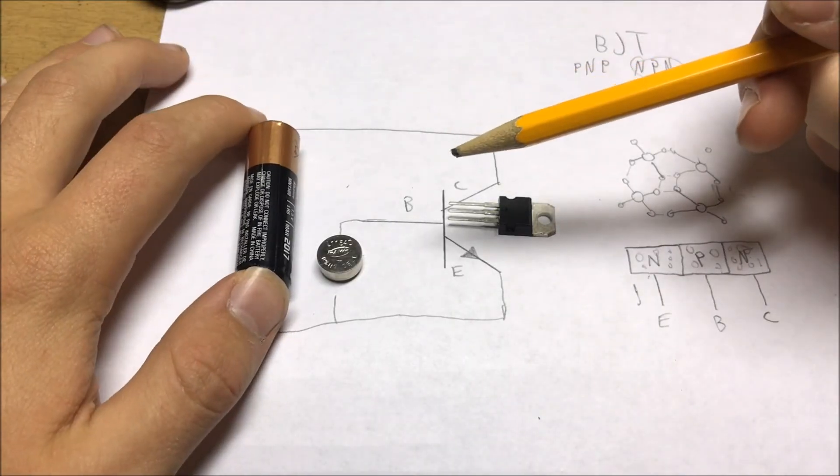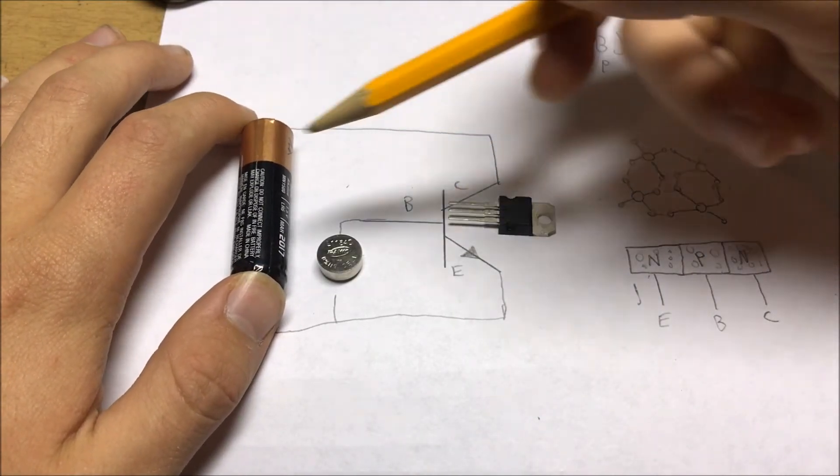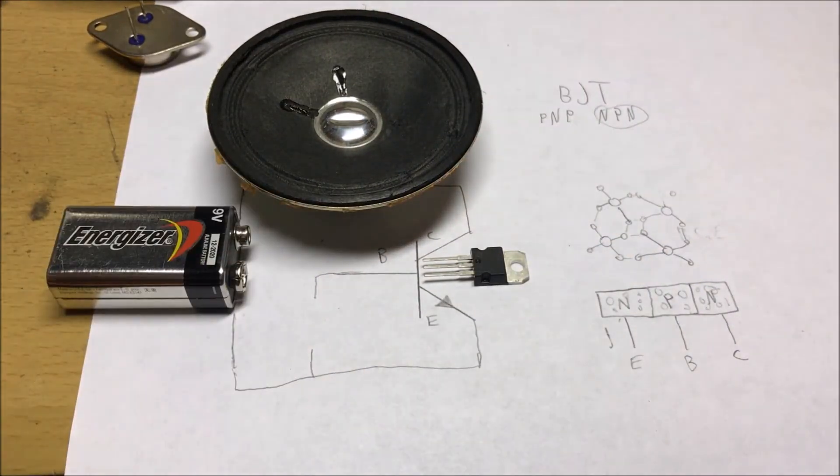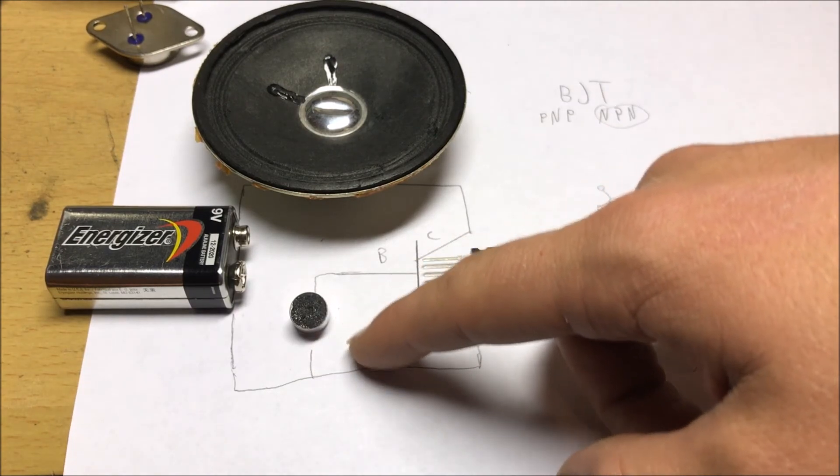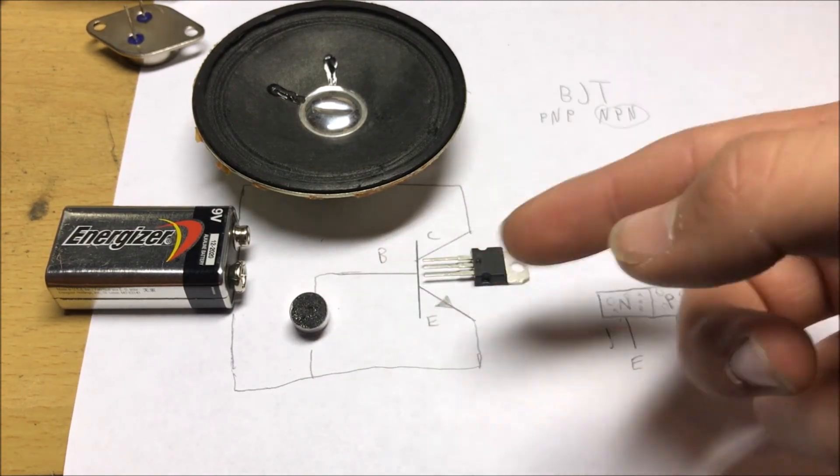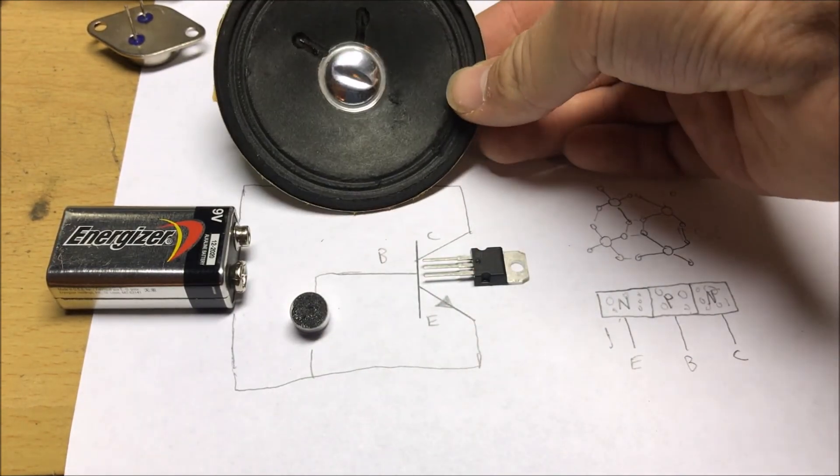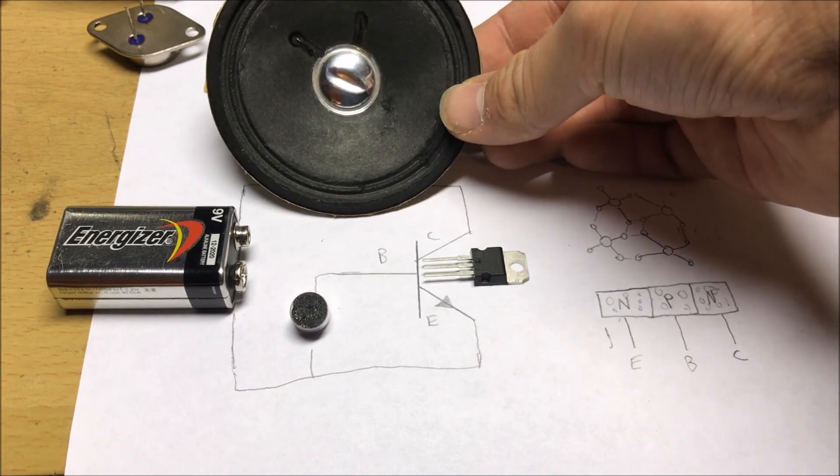So let's find some real practical applications of this transistor. Let's say you wanted to control a very loud speaker with a very tiny voltage like a microphone. It would allow the small current from this little tiny microphone to be amplified into a very large current that is able to drive this large speaker.